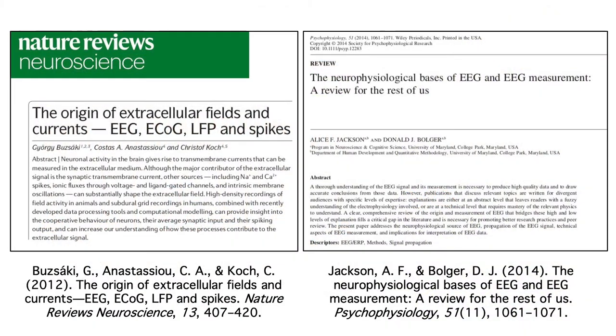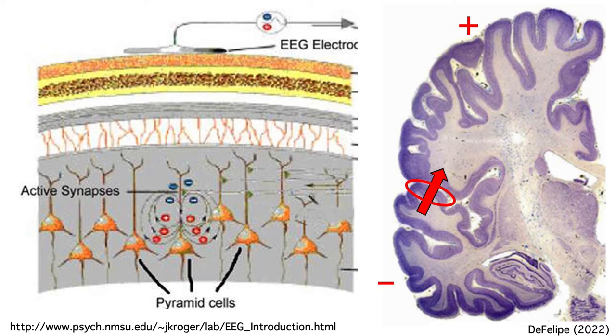If you'd like more details, here are a couple of excellent review papers. An ERP component is essentially the extracellular voltage produced by a cluster of functionally related neurons in the brain.